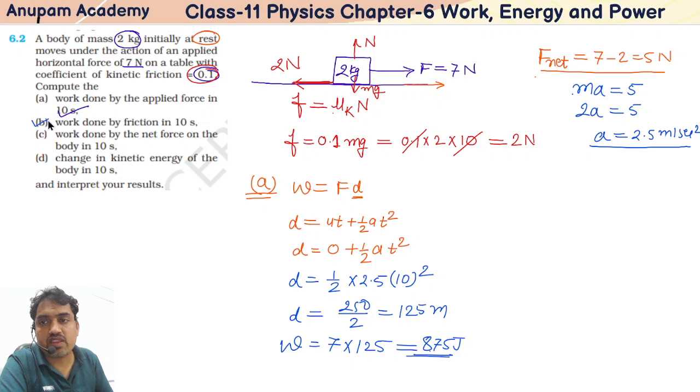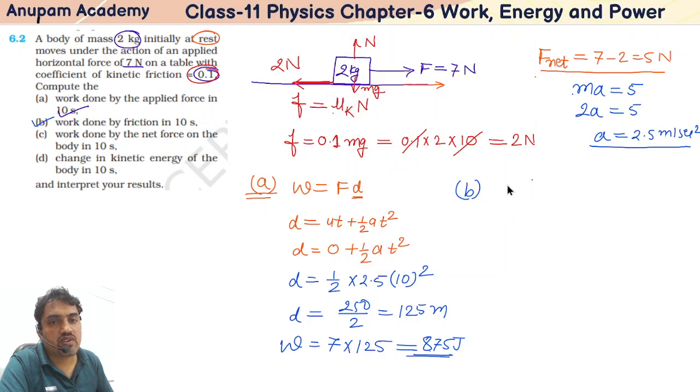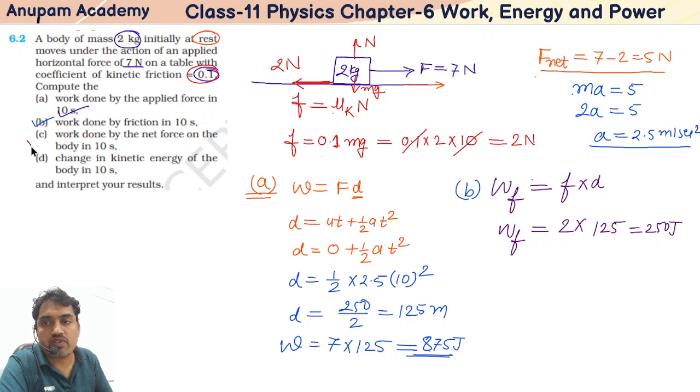Now part B: what is the work done by friction in 10 seconds? Work done by friction equals friction force into d. The friction force we already calculated is 2, and d is 125, so it is 250 Joules.